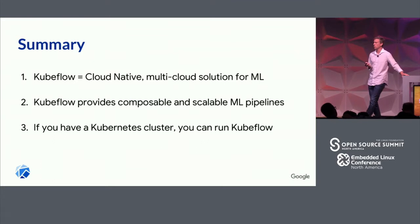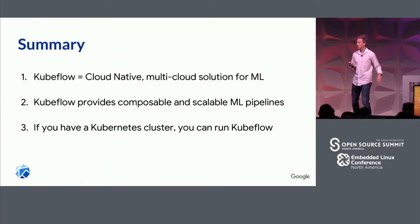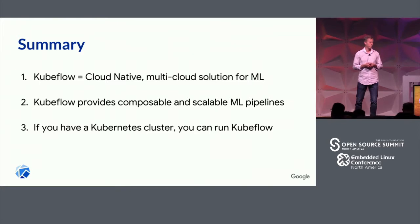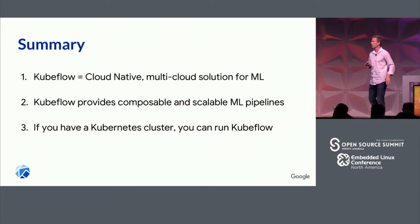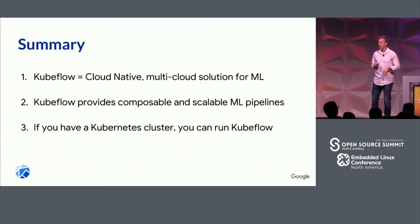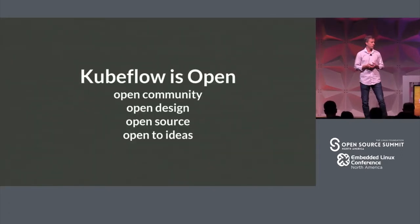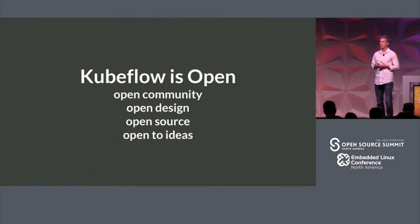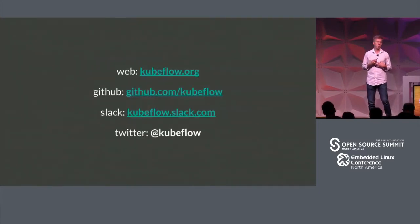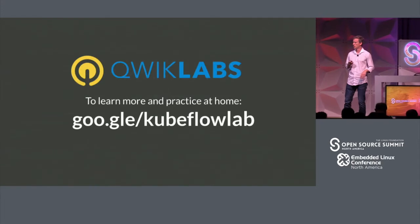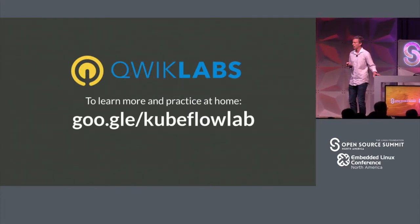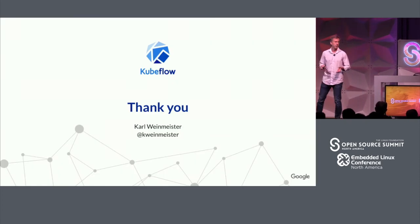In summary, we learned about Kubeflow, which is a cloud-native, multi-cloud solution for machine learning. It provides pipelines that you can build to match whatever you're doing in your business, and if you're running Kubernetes, you can run Kubeflow. It's an open and inclusive community — we're looking for people to take a look and maybe get involved. The main way to access Kubeflow is at the website, and there's also a GitHub and Slack community. If you want to try it out today, here's a link to a lab. Thank you very much for your time.